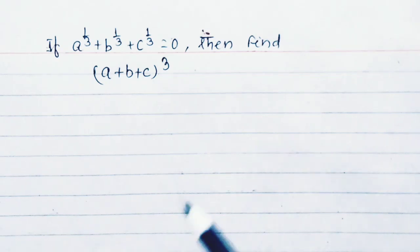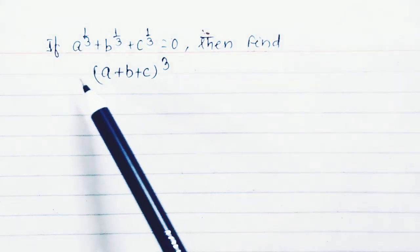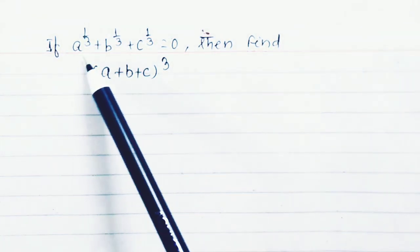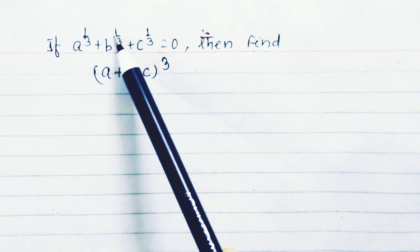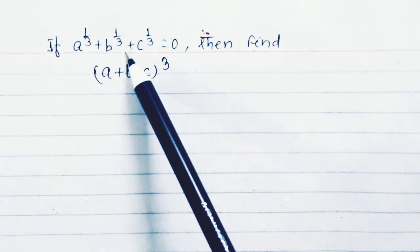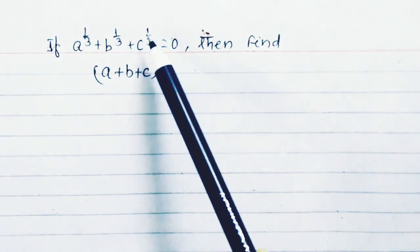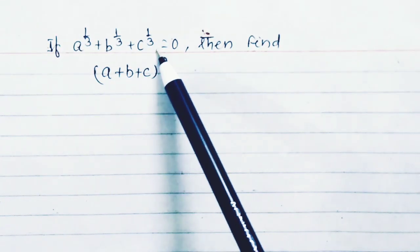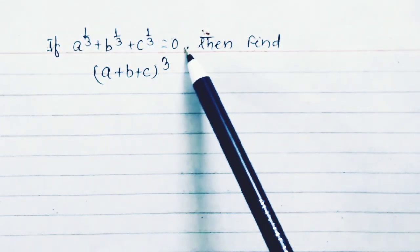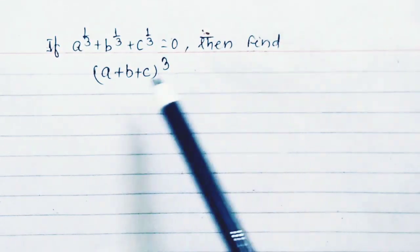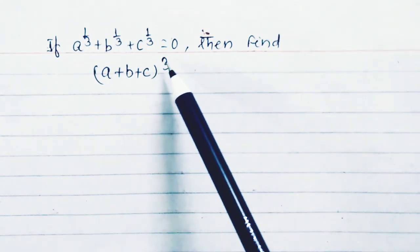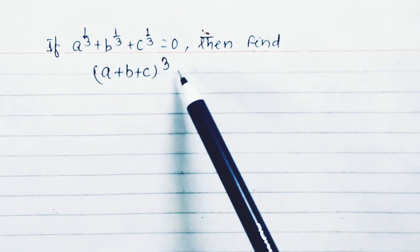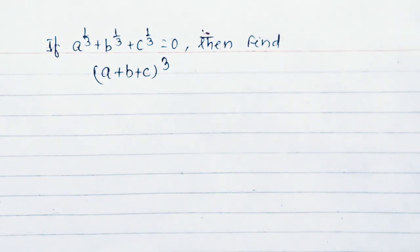Hello everyone, it is a nice Olympiad question. Given a to the power 1 by 3 plus b to the power 1 by 3 plus c to the power 1 by 3 equals 0, then prove that a plus b plus c whole cube equals 27abc.